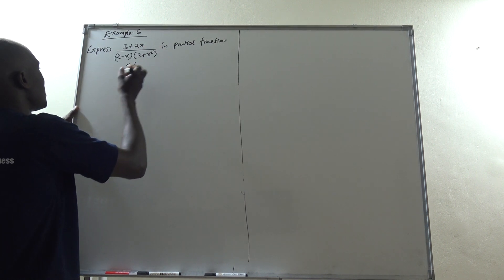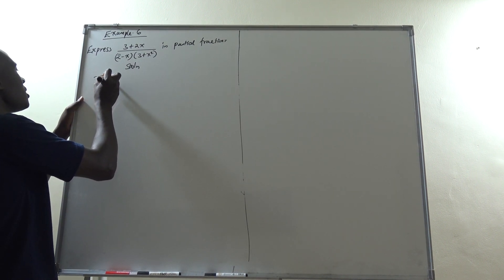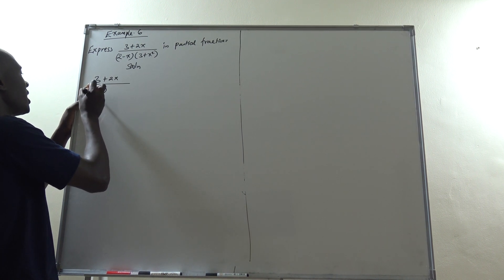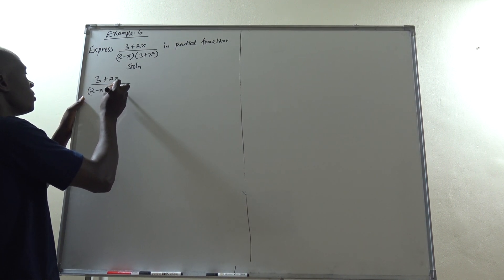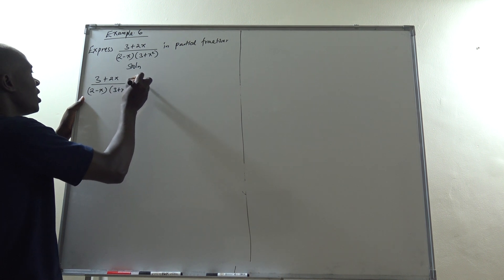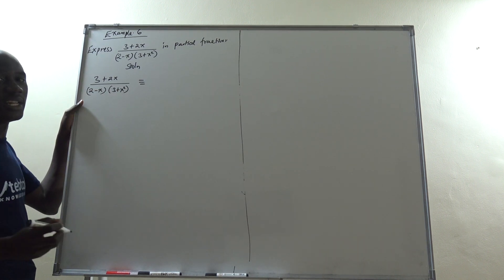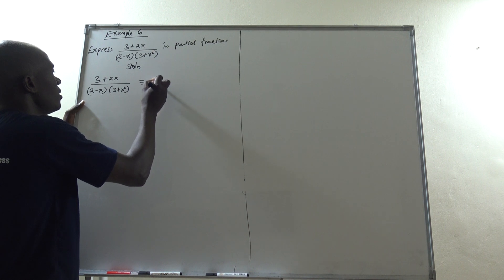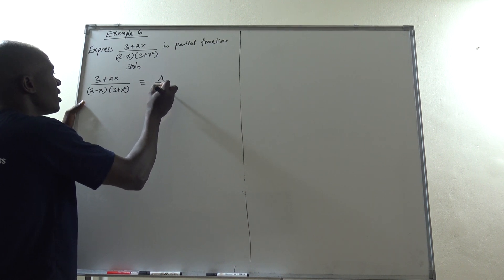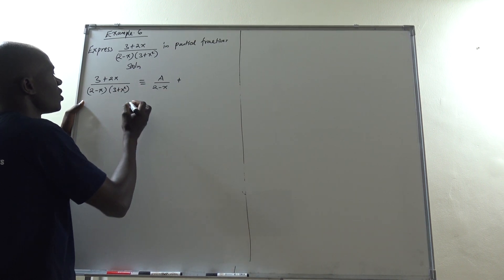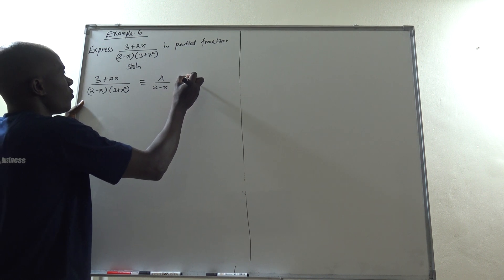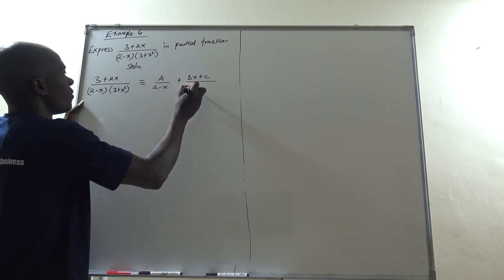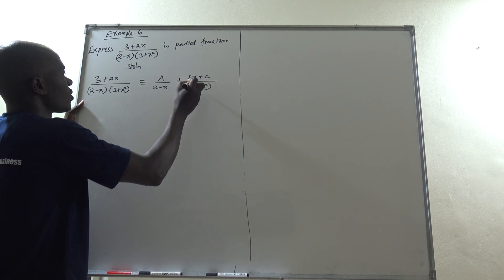We let (3 + 2x) / [(2 − x)(3 + x²)] equal a partial fraction decomposition. The first factor is linear, giving A/(2 − x), and the second factor is an irreducible quadratic, giving (Bx + C)/(3 + x²).